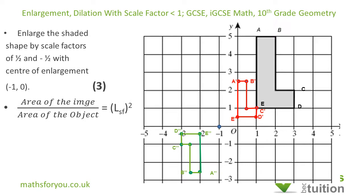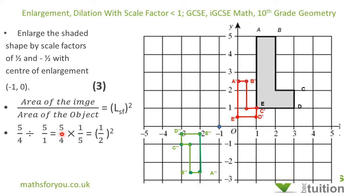Now let's verify: the area of the image divided by the area of the object equals the linear scale factor squared. The area of the image is five quarters; the area of the object is five. So five quarters divided by five equals five quarters times one fifth — the fives cancel, giving one quarter. Squaring the scale factor of one half also gives one quarter, so both sides agree. I hope that made sense — please subscribe and thank you for watching.